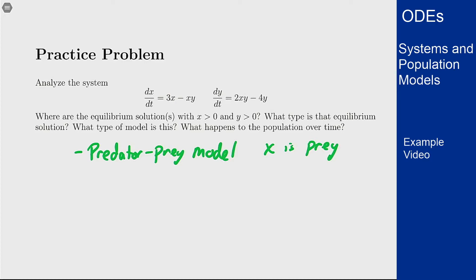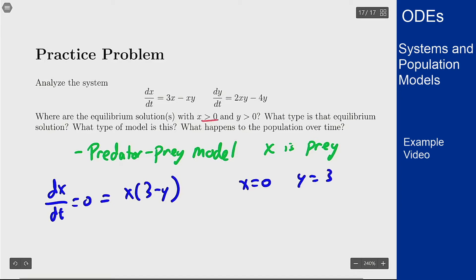Let's classify the equilibrium solutions and see what we get for that. So if we want dx/dt to be 0, you see this can be factored as x times (3 - y), so either it's x equals 0 or y equals 3. Since I want x to be positive I'm going to ignore the 0 one and look at the positive one.